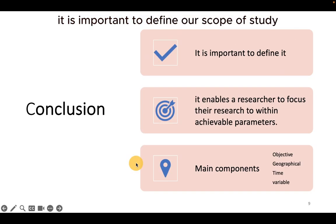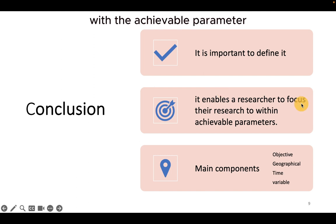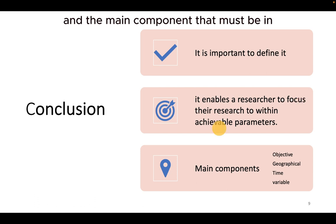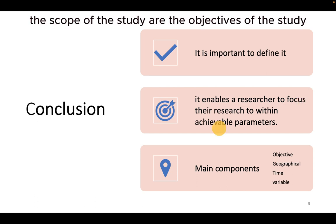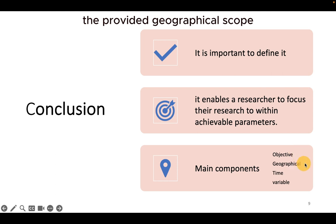In conclusion, it is important to define our scope of study as it enables the researcher to focus their research within achievable parameters. The main components that must be in the scope of the study are the objectives of the study, the geographical scope, the time scope, and the variable scope.